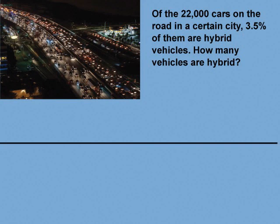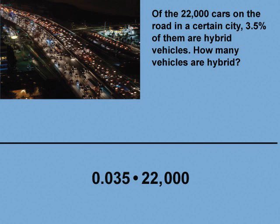Let's look at another example. Of the 22,000 cars on the road in a certain city, 3.5% of them are hybrid vehicles. How many vehicles are hybrid? This is another example of finding the percent of a number. Finding 3.5% of 22,000 can be calculated using the expression 0.035 times 22,000, but let's use a visual model to solve.